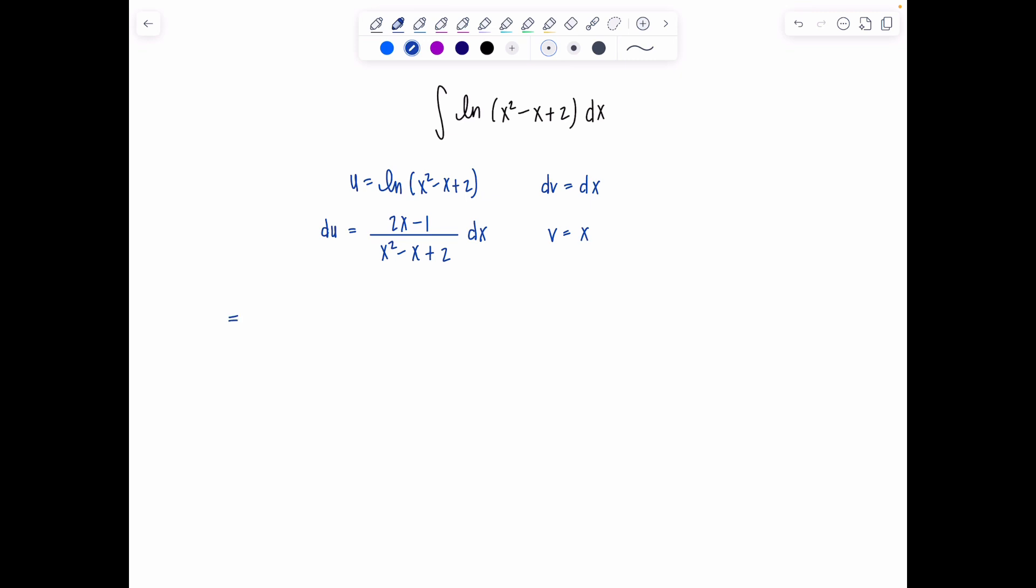Now using our bi-parts formula, we're going to have uv, so that's going to be x natural log x squared minus x plus 2 minus integral vdu. So I'm going to take this x and already distribute it through the numerator, 2x minus 1 to get the ball rolling. So we'll have 2x squared minus x over x squared minus x plus 2 dx. And now we're happy with how things are headed because I no longer have a natural log in the integrand. I just have this rational function. And always remember, if the degree of the denominator is not higher than the degree of the numerator, we need to long divide first.